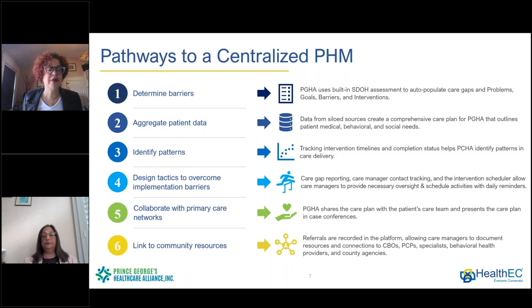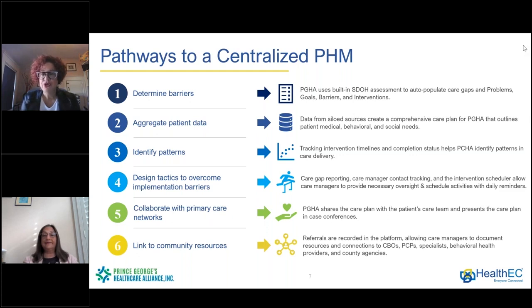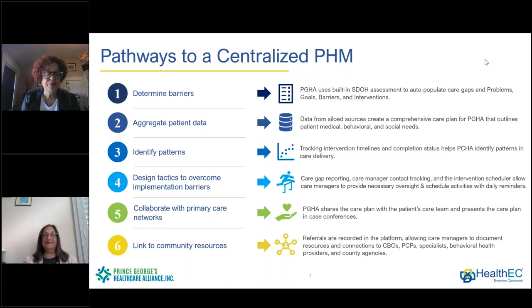There are design tactics to help us overcome implementation barriers. Through the use of social determinants of health and disease-based assessments, it helps us to allocate resources, identify the greatest needs, and provide care gap reporting, care manager tracking. The intervention scheduler helps our community health workers and care managers identify the specific tasks needed each day to help them achieve their goals and stay on track. This information is also shared with primary care networks where we're integrating and incorporating data that helps us present a comprehensive overview of the patient's needs.